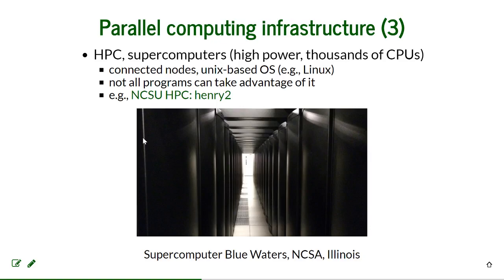NCSU HPC — Henry 2 — is one such system you can request access to. You don't have to use multiple nodes if your program can't take advantage of it, but it's a more involved process because you have to communicate with the people running the HPC and make sure the software you need is installed. For example, people here have been using it with R, and GRASS is also installed along with other programs.